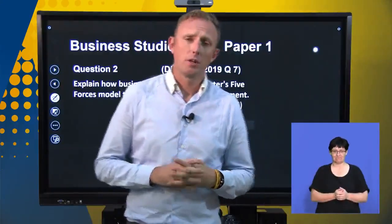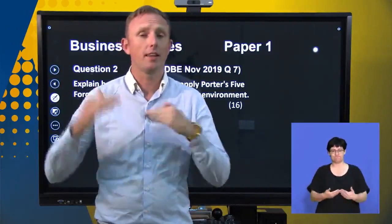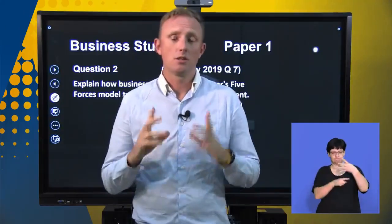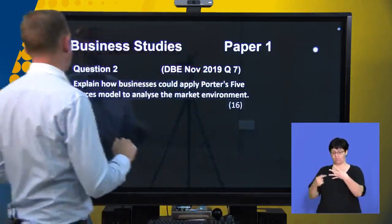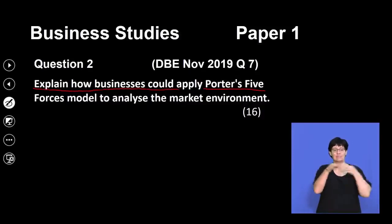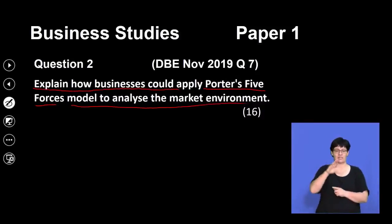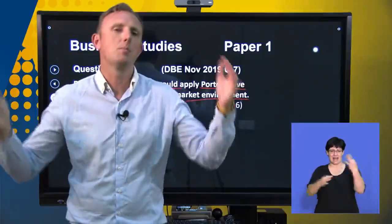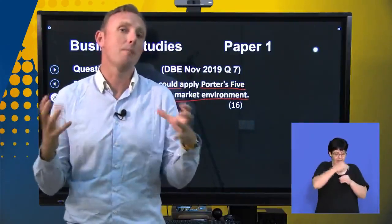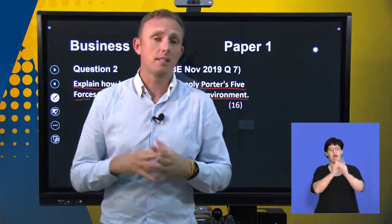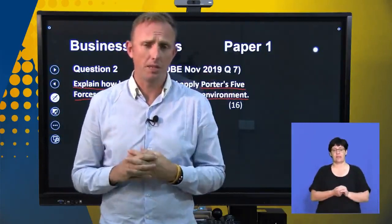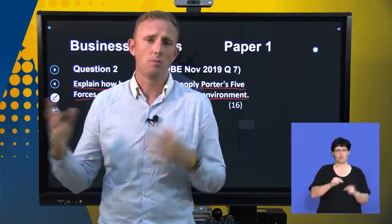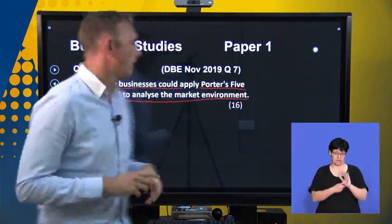Welcome back Matrix. We're going to be carrying on with this essay question that can be broken down and potentially be section B questions. We've done the first two parts of the question. Now we'll be going on to the third part: explain how businesses could apply Porter's Five Forces model to analyse their market environments. The market environment is the environment just outside of the business. Porter's Five Forces has to do with the main elements of the market environment. In this essay this is for a maximum of 16 marks, but section B questions could range from eight to twelve marks.